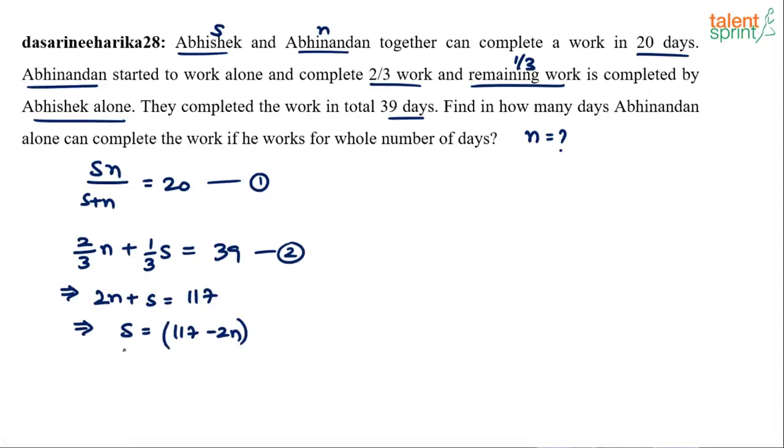So what do we get? If you put this in first equation we will get 117 minus 2N into N divided by 117 minus 2N plus N equals to 20. Simplify this now. So 117N minus 2N squared equals to 20 times of 117 minus N. You will get a quadratic equation you have to solve for it.